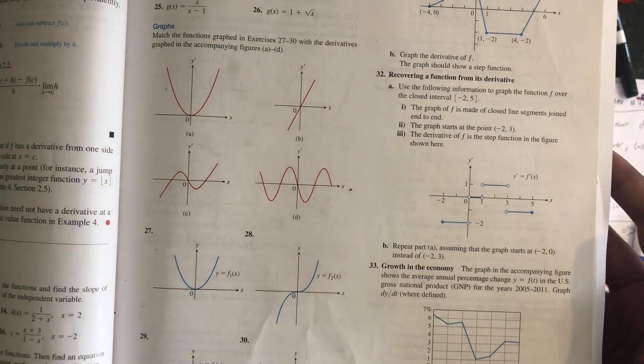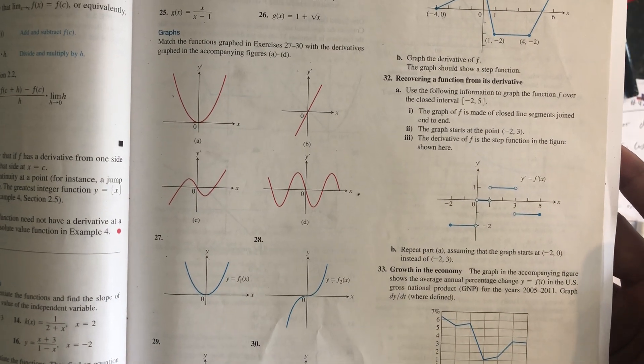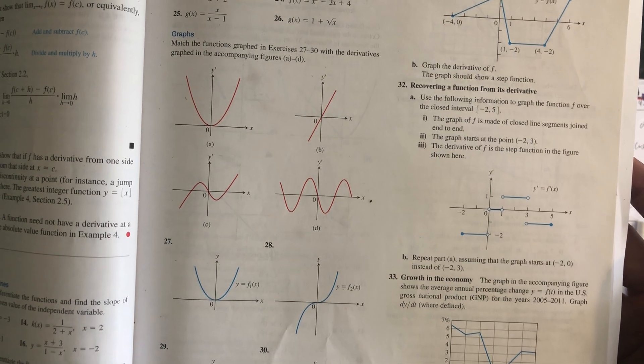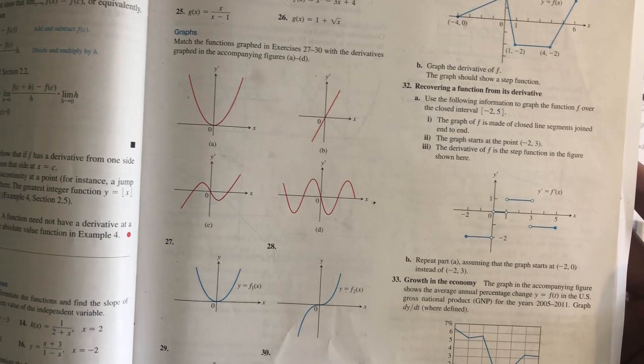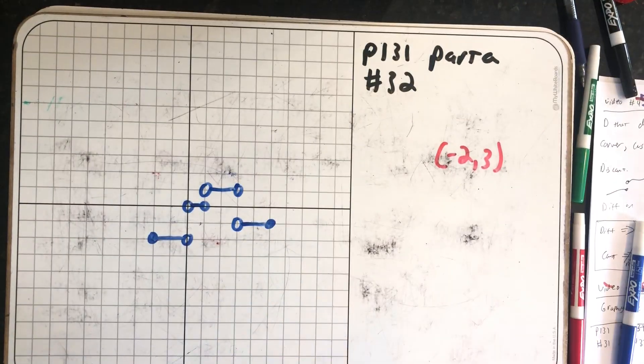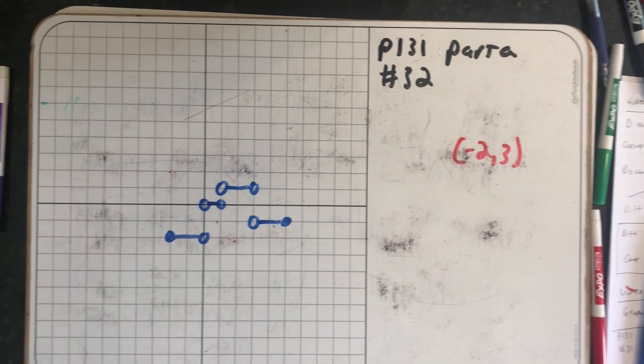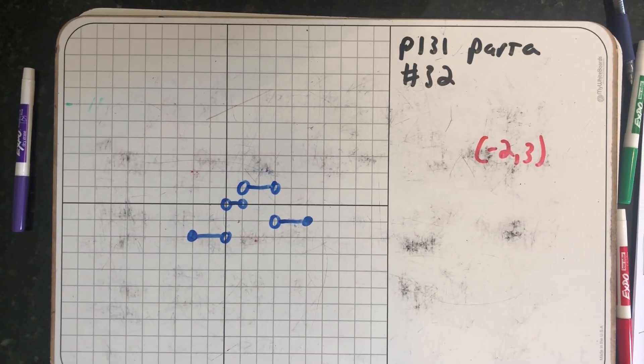Recovering a function from its derivative. Use the following information to graph the function f over the closed interval -2, 5. The graph of f is made of closed line segments joined end-to-end. The graph starts at the point (-2, 3). The derivative of f is the step function shown in the figure. I've copied over the step function to a different scale so I can work on this board, but all the other information will help me get through it.